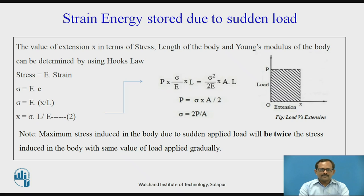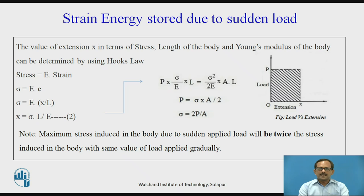Putting the value of extension from equation 2 into the earlier equation, we get P into sigma L upon E equals sigma squared upon 2E into A into L. Cancelling E and L from both sides, we get P equals sigma multiplied by A upon 2. Therefore, stress sigma equals 2 times P by A. This equation gives us the stress induced in the body when the load is applied suddenly.